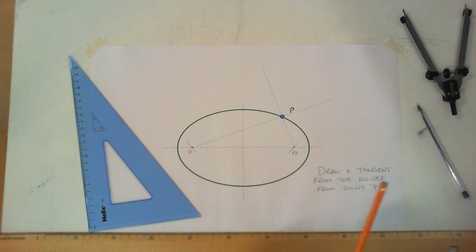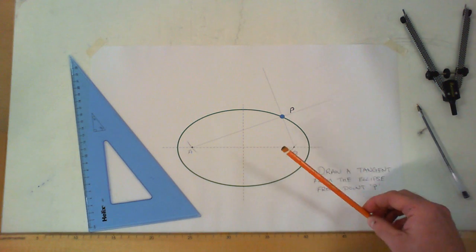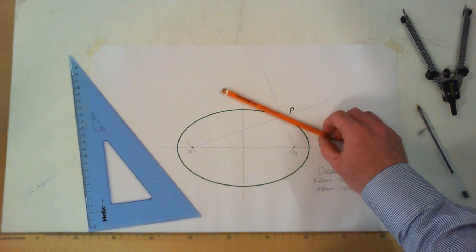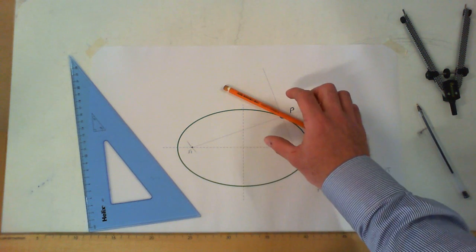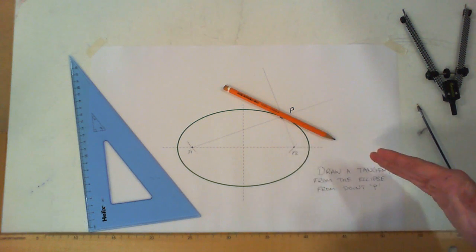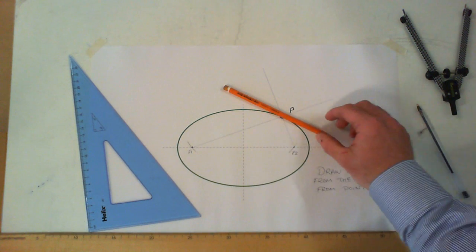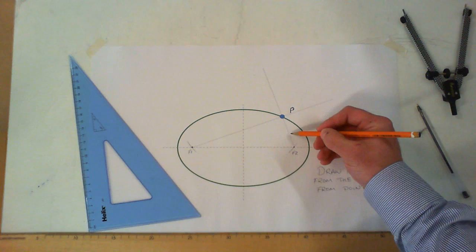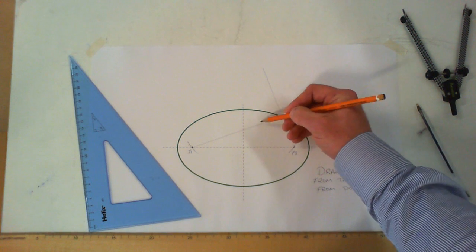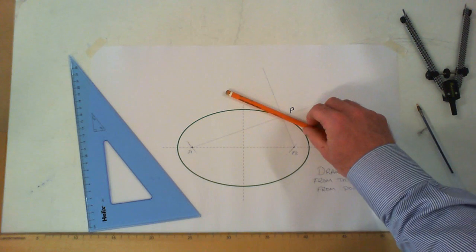Now just by looking at the drawing, I can tell that my tangent has to run in that direction. What I'm going to do is, from the shape of the X that I've just created, I'm going to bisect the angle that is going in that direction. If I look at my X shape, I could bisect the angle between these two lines, and a bisecting line would give me the direction of my tangent.